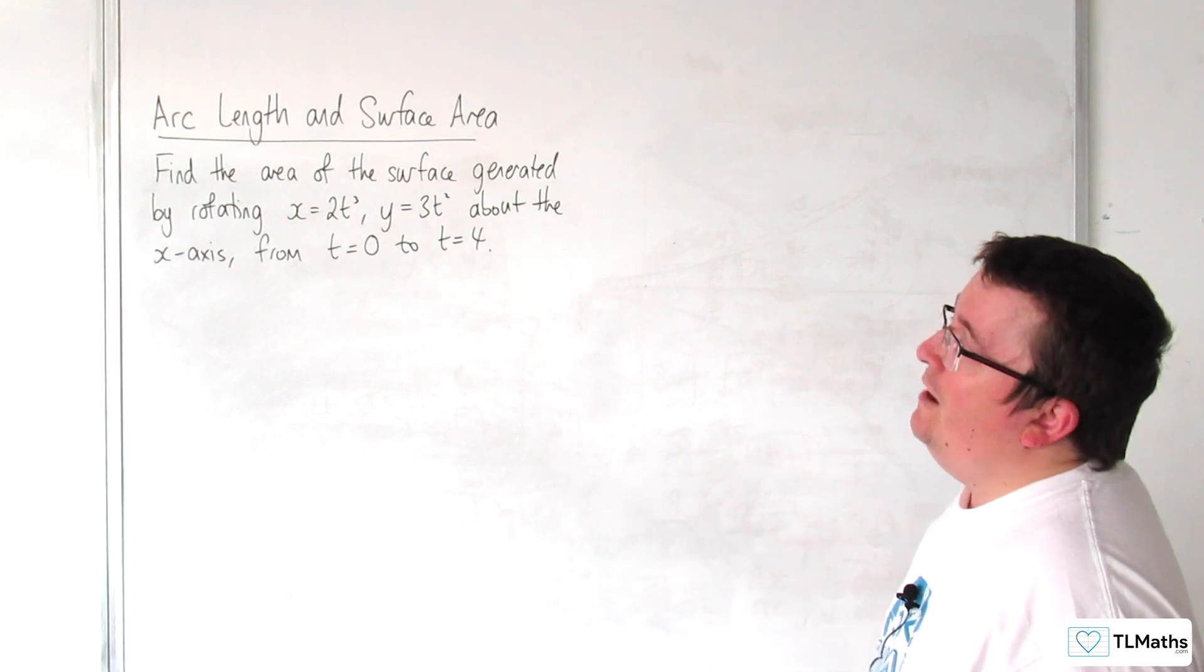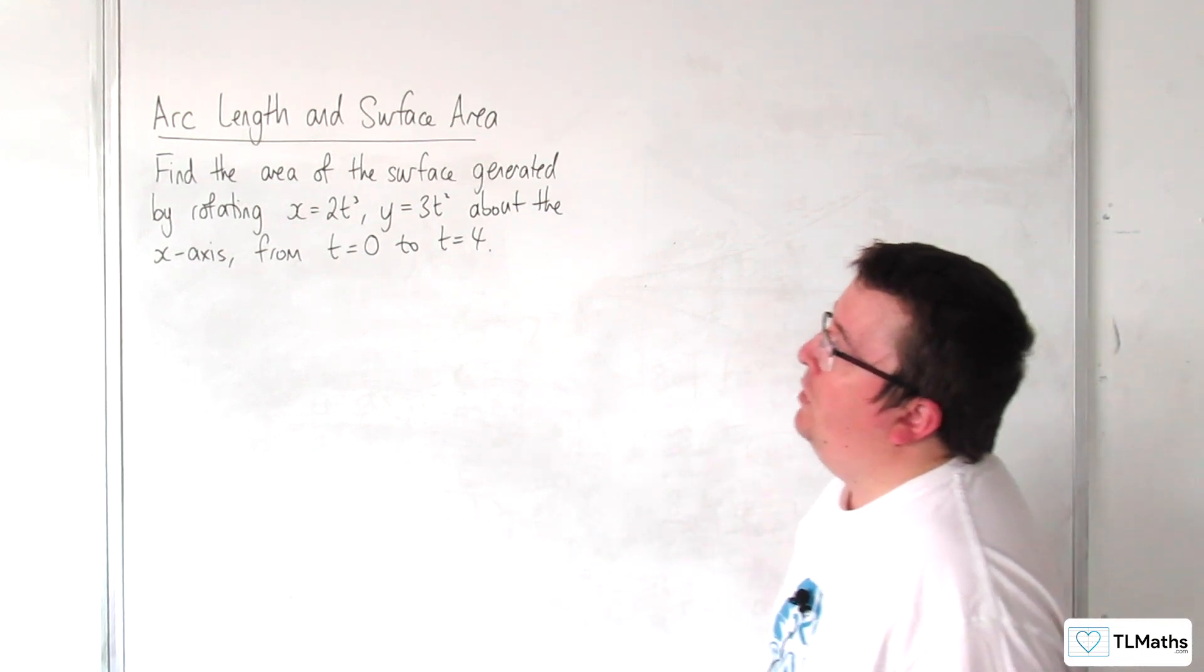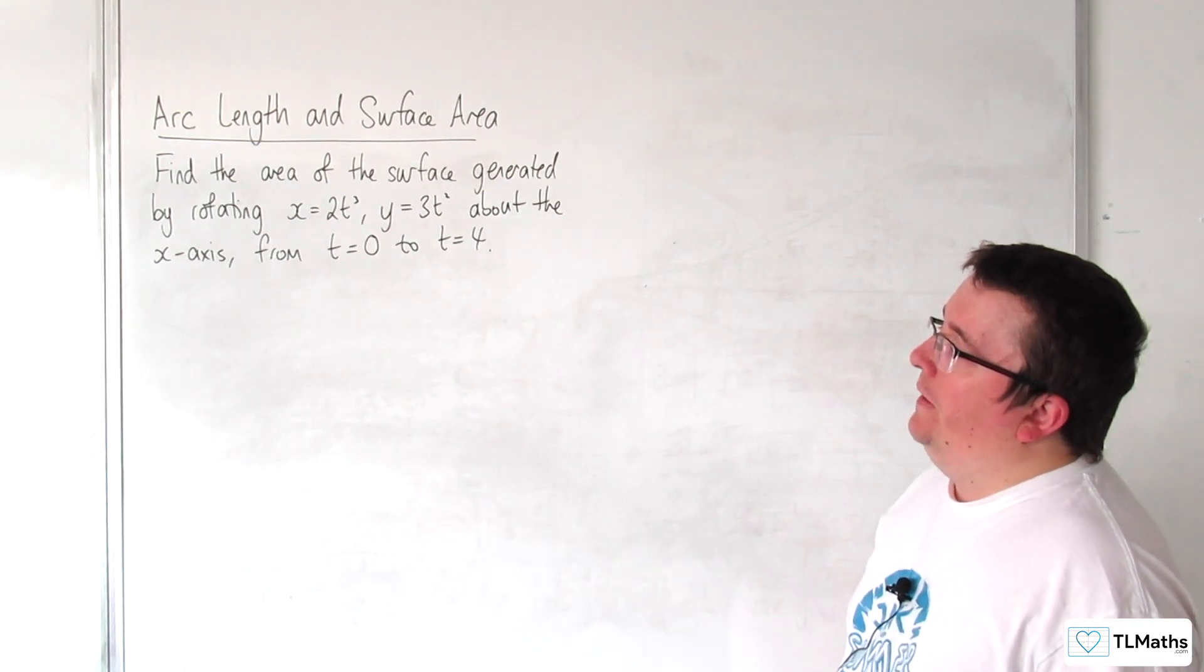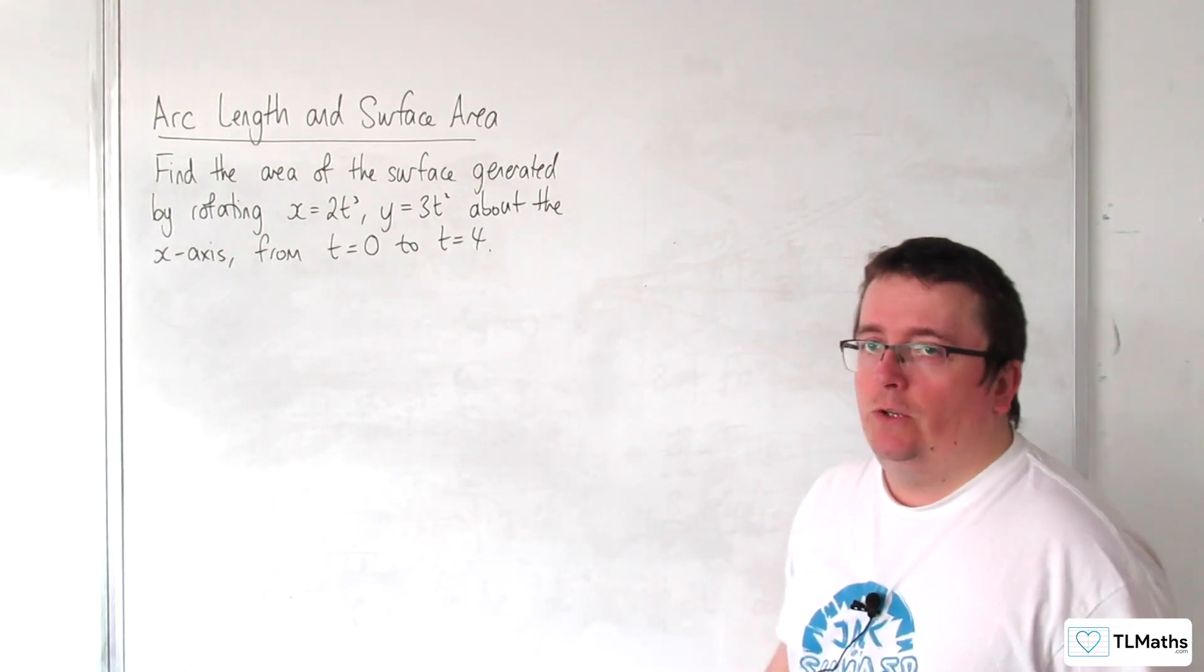In this video, we're going to find the area of the surface generated by rotating x equals 2t cubed, y equals 3t squared, about the x-axis, from t equals 0 to t equals 4.